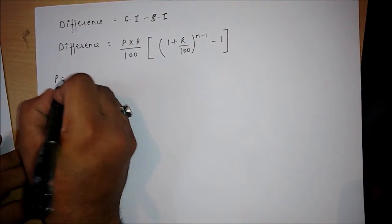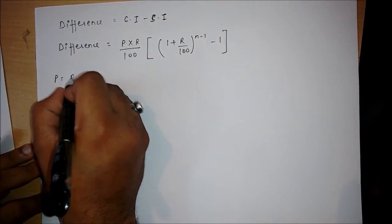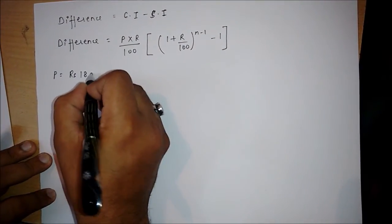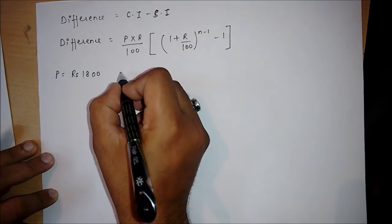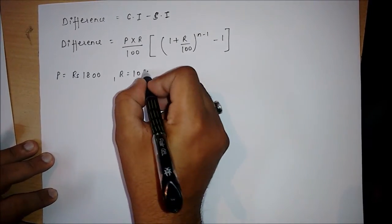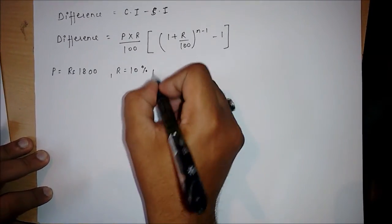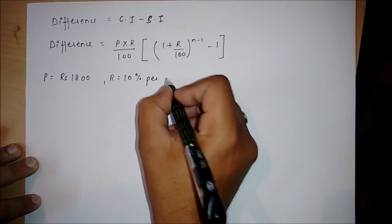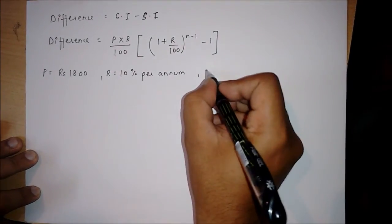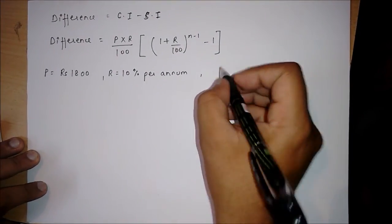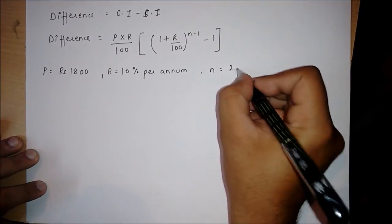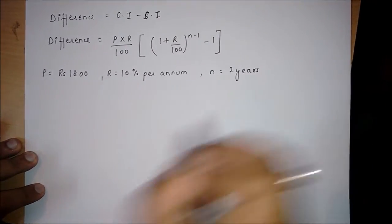Suppose we have a principal of rupees 1800, a rate of interest of 10% per annum, and a time equal to 2 years.